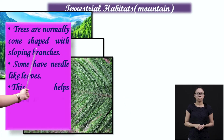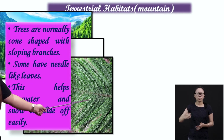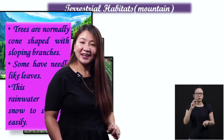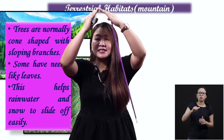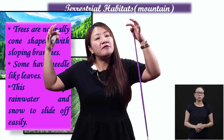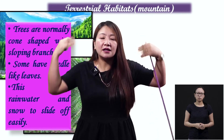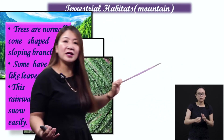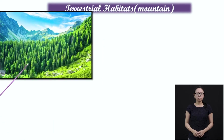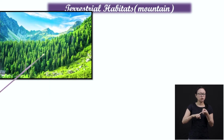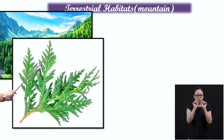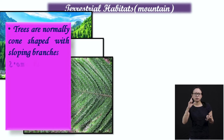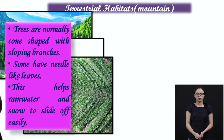Trees in the mountains are normally cone-shaped with sloping branches, and some have needle-like leaves. This helps rain, water, and snow to slide off easily. The plants are shaped like a sloping roof so that even if rainfall comes or snow falls on them, it can easily slide off their leaves and keep themselves warmer. All the pointed and sloping shapes mean that rainwater or snow can easily slide off their bodies.